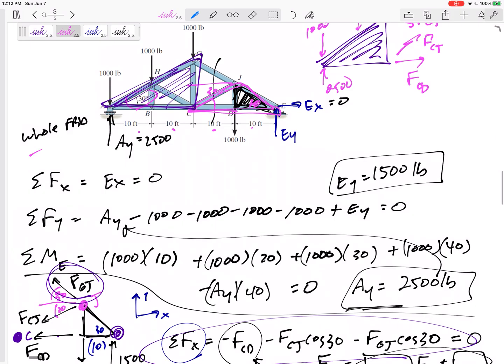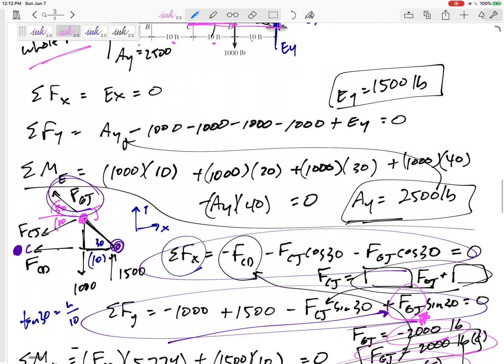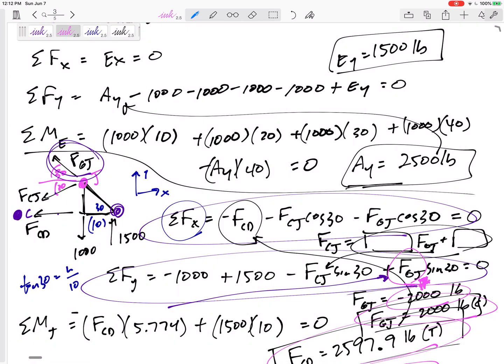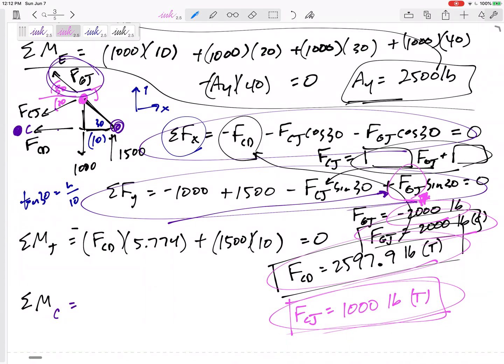So take a step back. We looked at the whole free body diagram. Solved for what's happening at pin E and roller A, and then we broke it up into a section. We cut it. We exposed FCD, FCJ, FGJ, and three equations to solve for those three unknowns. Three equations and three unknowns is probably a good sign that you're on the right track. If you have four unknowns and only three equations to solve, then you can't solve something went wrong. You've got to do it a different method.